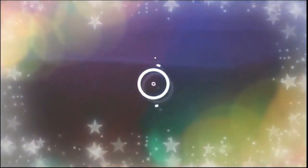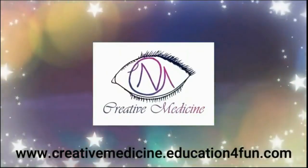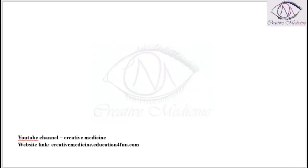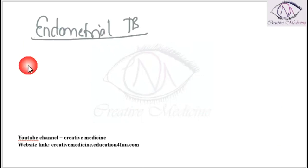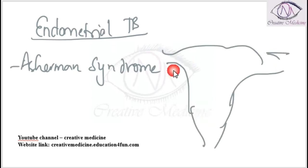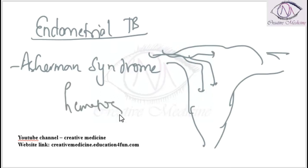Welcome to Creative Medicine. In this lecture we will learn about endometrial tuberculosis. The clinical feature of endometrial tuberculosis is mainly Asherman syndrome. In endometrial tuberculosis, the infection spreads from the fallopian tube to the endometrium. The most common route of spread of genital tuberculosis is hematogenous.